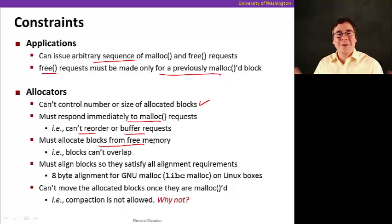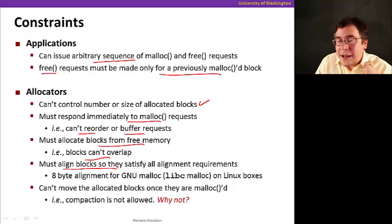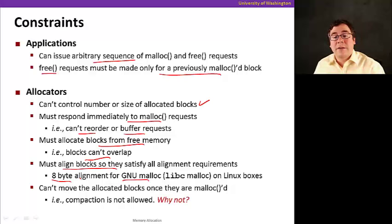Of course, we only want to allocate blocks from free memory. If you allocate blocks from allocated memory, it's going to be a big mess. You're going to be overriding data from the application. That is not going to be a good thing for sure. You can create bugs that are hard to find and so on. So blocks cannot overlap. And also, it has to align blocks. And by alignment, it means that the pointer at the beginning of the block has to be a multiple of a certain number. For example, the GNU malloc library allocates blocks in an 8-byte granularity. This is just to satisfy a bunch of alignment requirements.